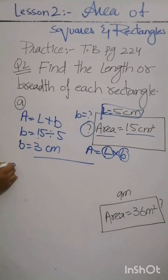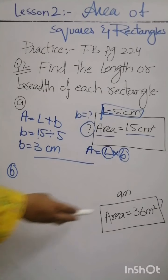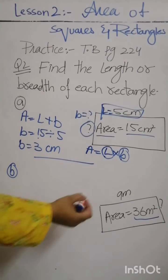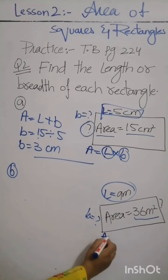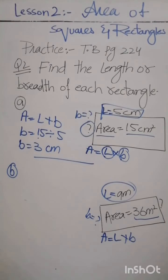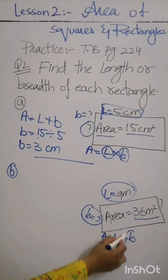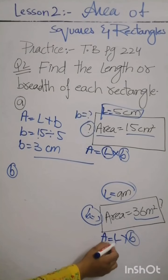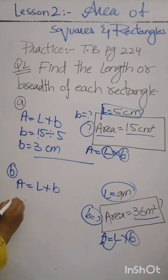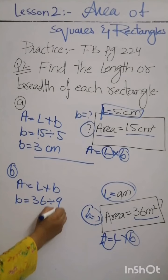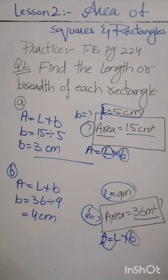Now for the next part, we have area of 36 square meters and the length is 9 meters. We need to find the missing breadth. Using the formula area is equal to length multiplied by breadth, we divide area by length. So breadth is equal to 36 divided by 9, which gives 4 meters.